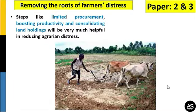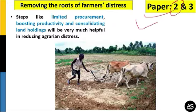This first article is related to the rural distress which has been in our Indian agriculture sector. You can relate this article with Paper 2 and Paper 3. Paper 2 relates to government policy and measures, and Paper 3 relates to agriculture. The article suggests measures like limited procurement, boosting productivity, and consolidating land holdings to deal with agriculture distress.